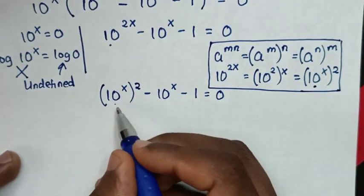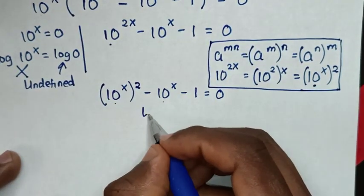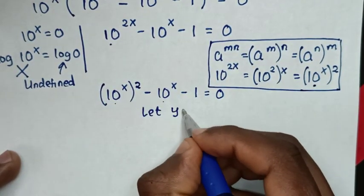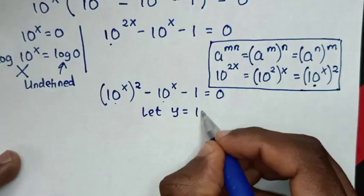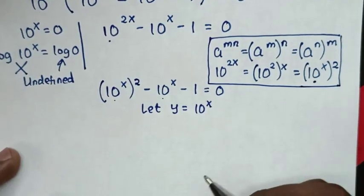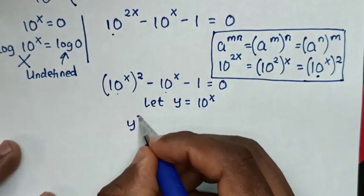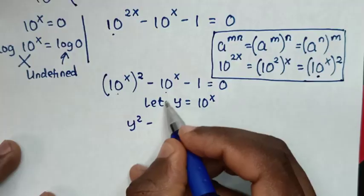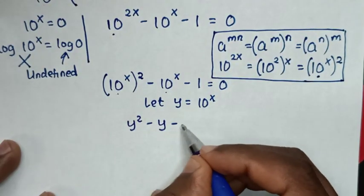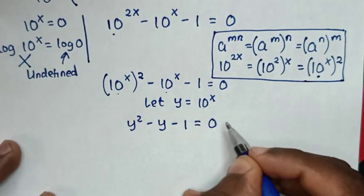Since 10 to the power of x is common, we let y equal 10 to the power of x. The equation becomes y squared minus y minus 1 equals 0.